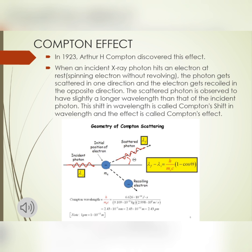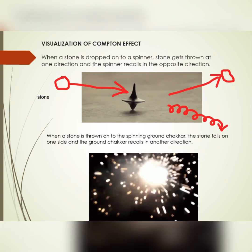This shift in wavelength is called the Compton shift and the effect is called the Compton effect. In the equation shown in the yellow box: lambda-f minus lambda-i equals h over m-naught c, multiplied by (1 minus cos theta). Here h is Planck's constant, m-naught is the rest mass of the electron, c is the velocity of light, and theta is the angle of scattering shown in the diagram. This is the famous Compton equation derived mathematically. The equation confirms that lambda-f is greater than lambda-i, consistent with the statement that the scattered photon has a slightly longer wavelength.